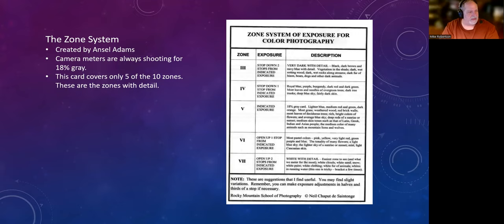Royal blue, purple, burgundy, dark red, dark green. That's a zone four. This is the one that you can actually center your needle on zone five, 18% gray card. And back in the day shooting film, I kept one in my bag all the time. Lighter blue, medium reds or green, dark orange, most grass. So this actually works very well. I've been out say shooting soccer. I'll get a meter reading off of the grass. I center the needle.